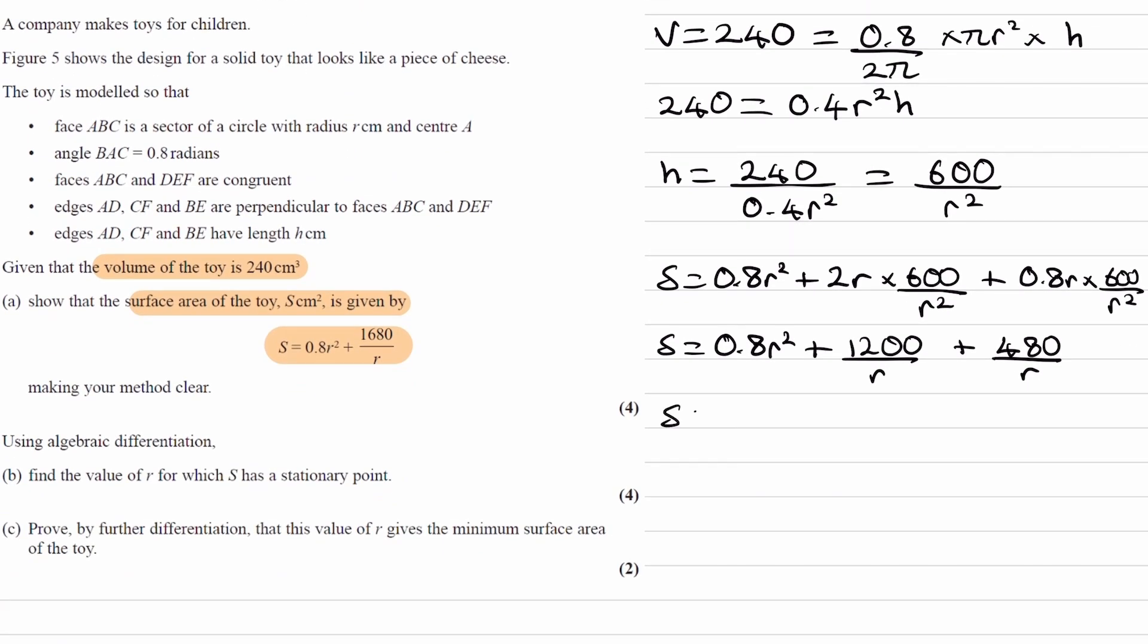And then we can combine these two things to give, so 1200 plus 480 will give us 1680 over r, which is what we want.